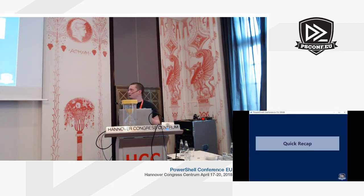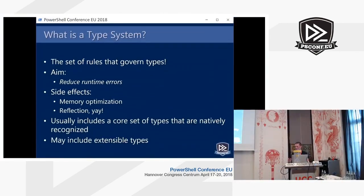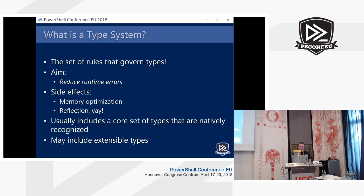A quick recap of what I talked about yesterday. I posed the question: what is a type system? The conclusion was that a type system, at least in the context of computer programs and programming languages, is a set of rules that govern how data types that we operate on behave. The primary aim of defining type systems is primarily to reduce runtime errors — we want to make sure that when someone writes some code and tries to compile it, they get a warning at compile time rather than when they try to run their program.